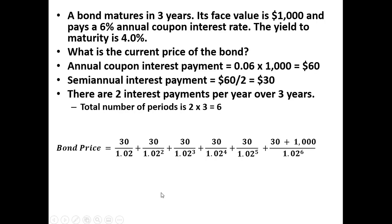Here is our formula. The $30 represents a semi-annual interest payment. Notice there are six of them — we're dealing with three years and two payments per year. This $1,000 means that at the end of three years, or at the sixth period, the person will be receiving their $1,000 face value for the bond in addition to that $30 semi-annual interest payment.